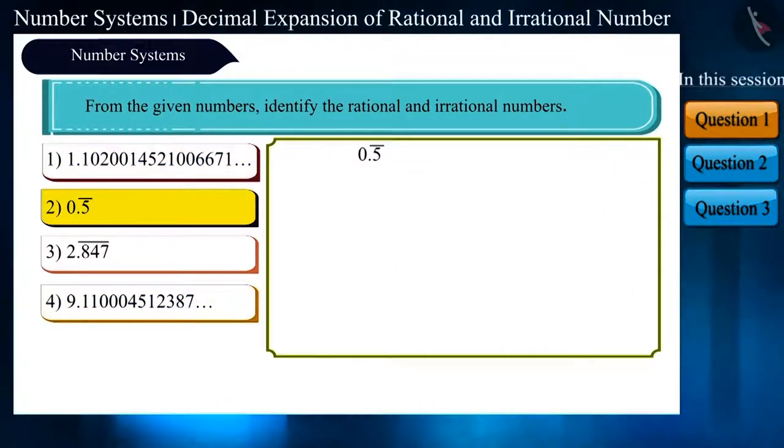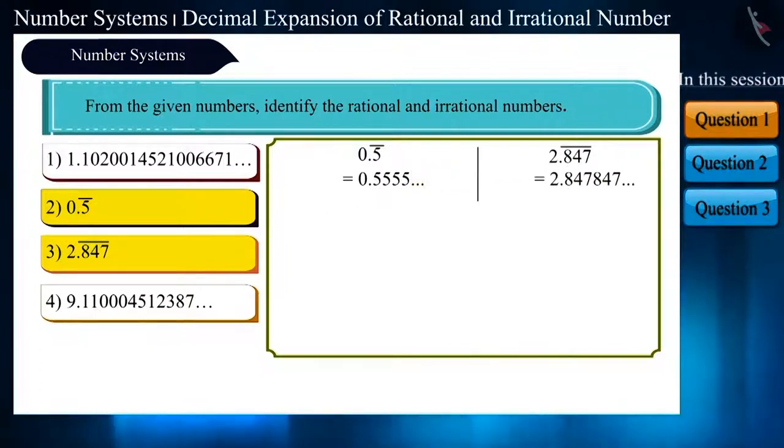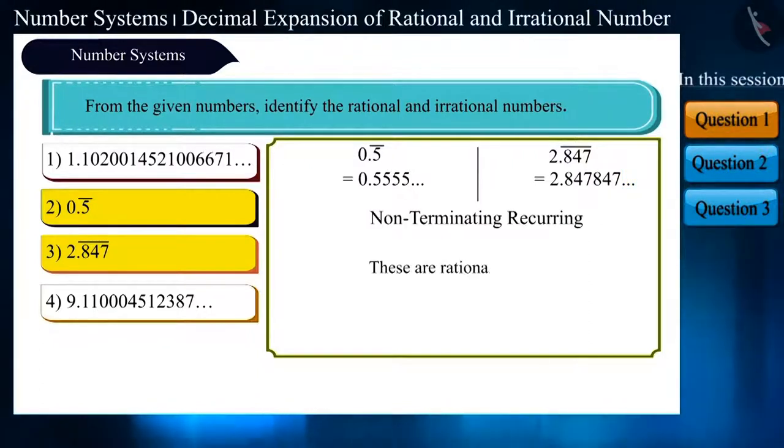In the second number, the bar above 5 indicates that 5 is being repeated here. And in the third number, the group 847 is repeating after the decimal. Therefore, they are both rational numbers.